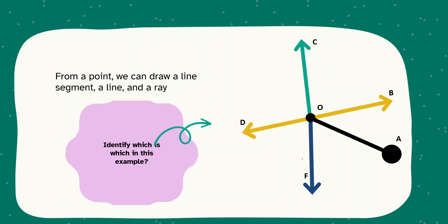From a point, we can draw a line segment, a line and a ray. If we consider this as a point, O as a point, can you identify the examples of this different line? For example, if we consider OA, OA is line segment because it has a fixed length. And if we consider DB, DB is a line. And OC is a ray. Similarly, OF is a ray.